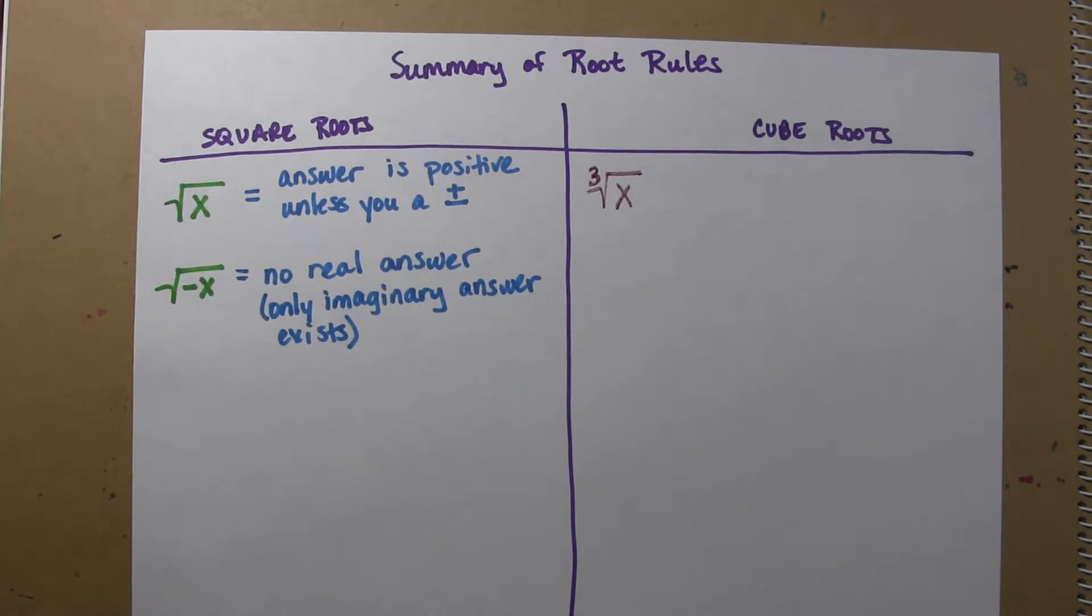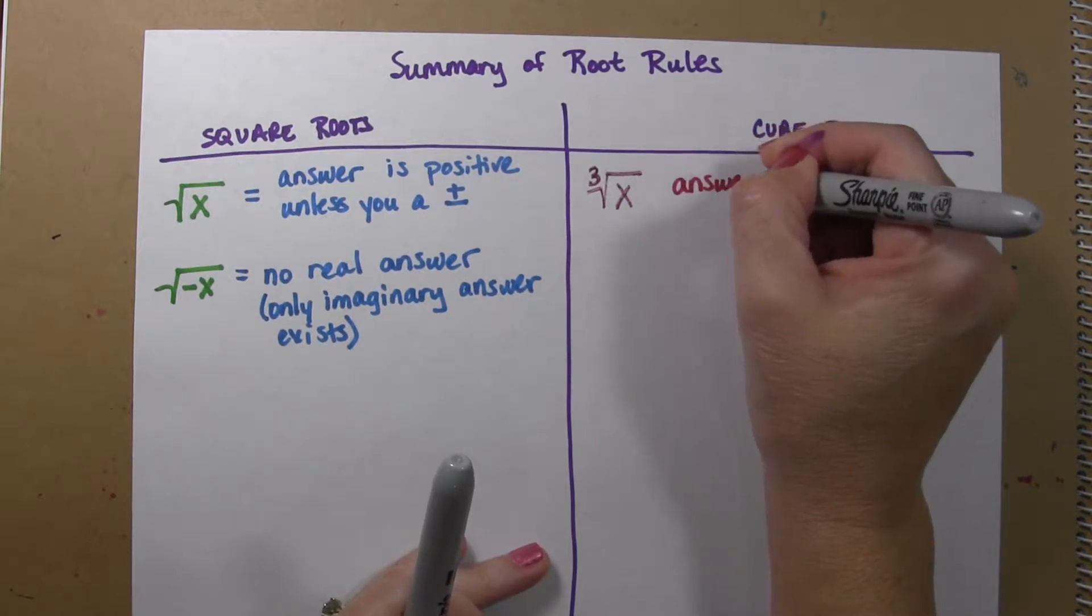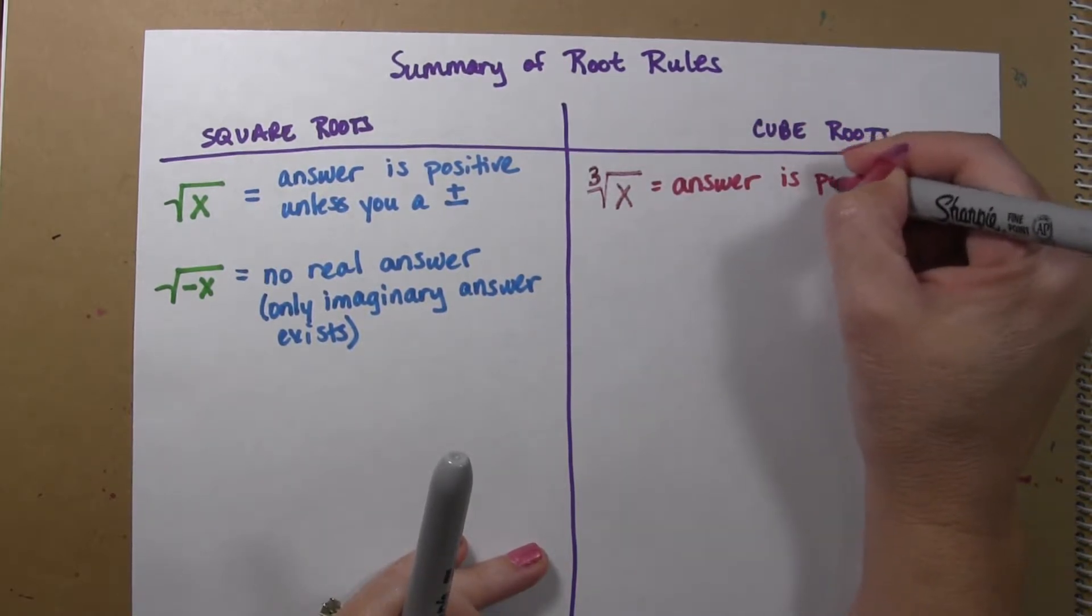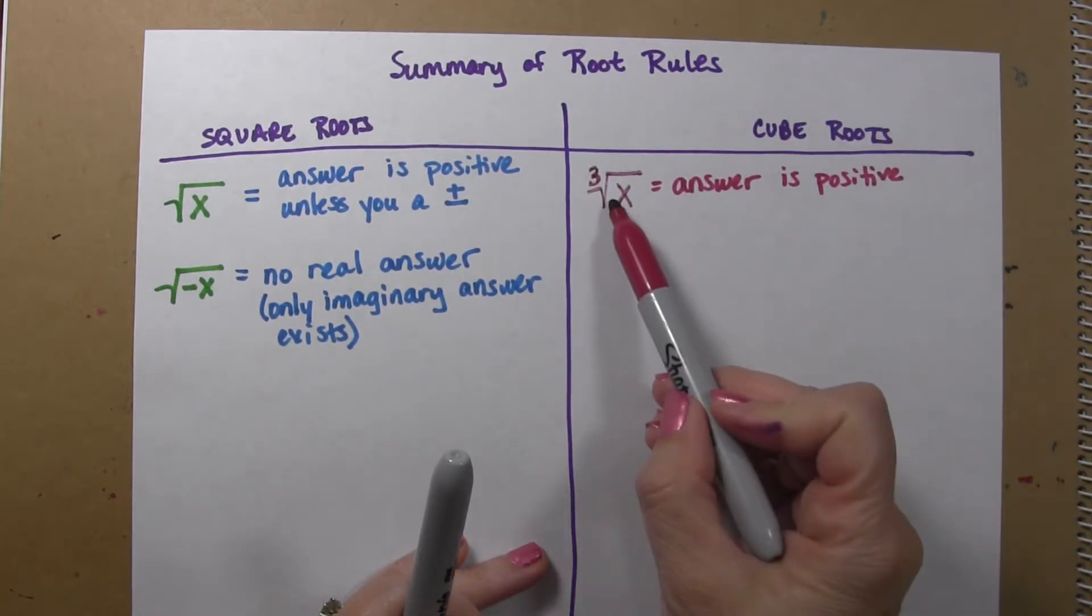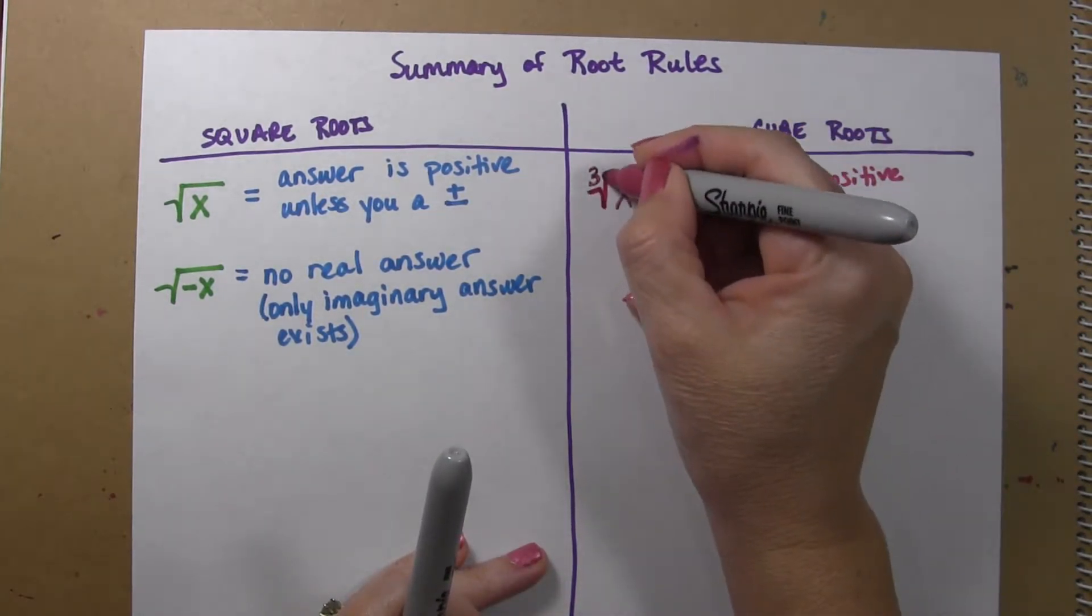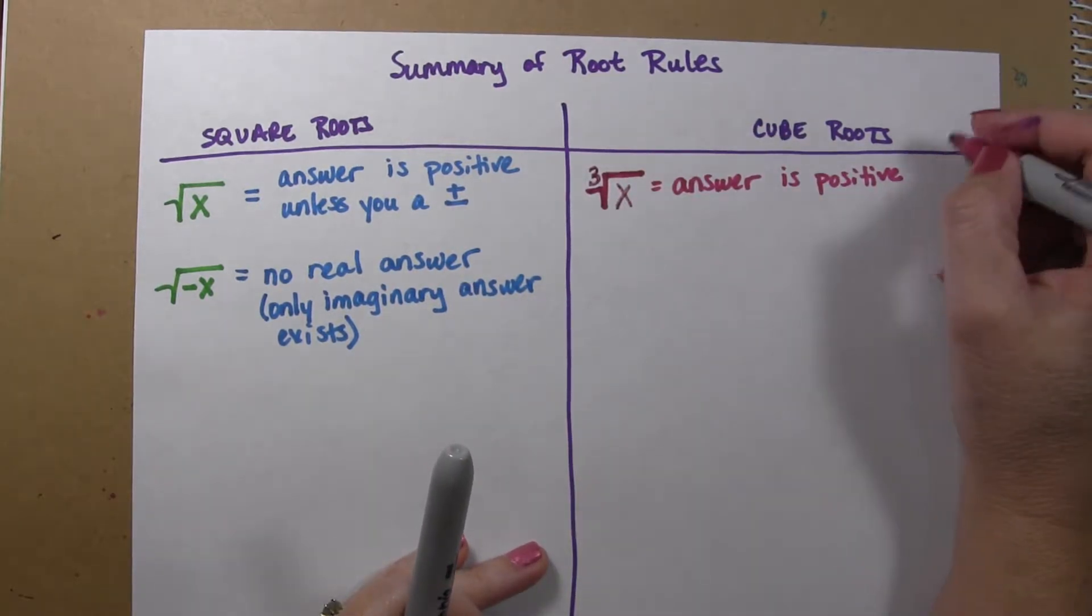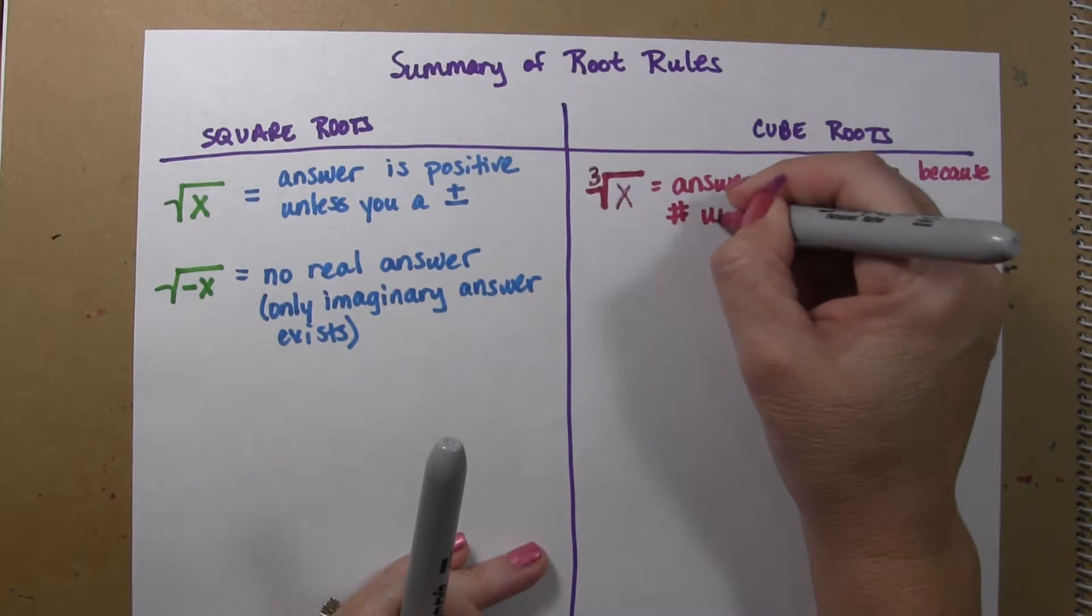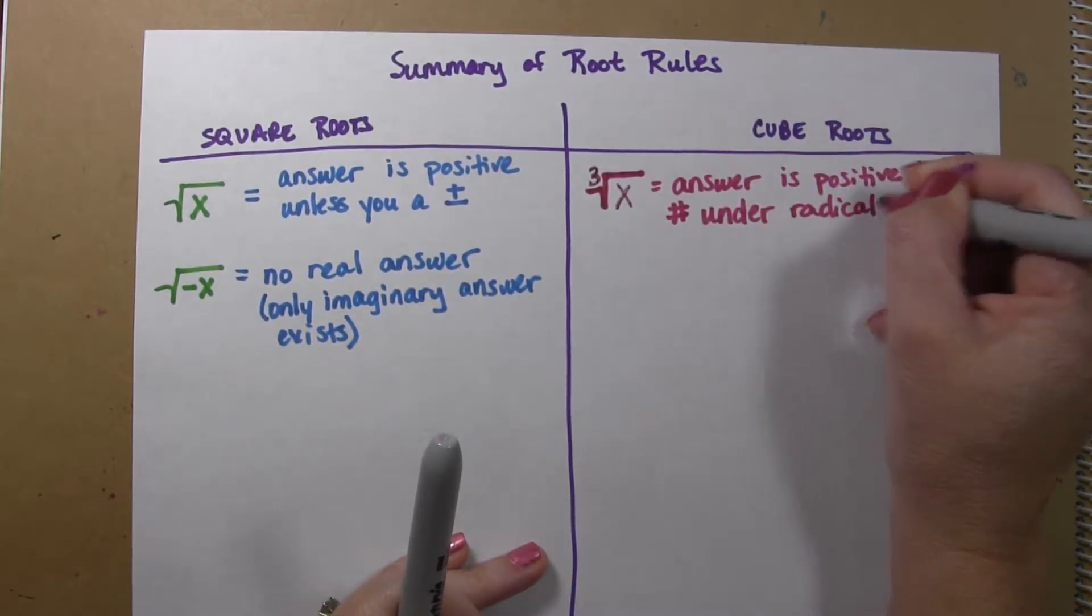then we know that the answer is positive because we have a cube root sign here and we have a positive number underneath the radical sign. Because number under radical is positive.